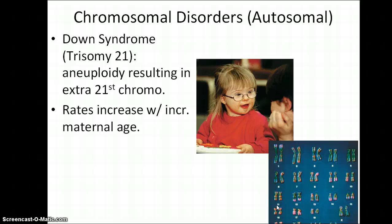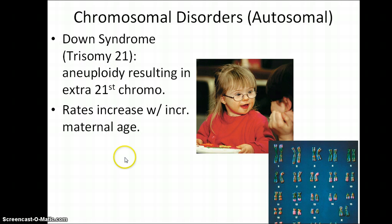In terms of chromosomal disorders, autosomal disorders are found in circumstances where there are extra or missing chromosomes in chromosomes 1 through 22, or where you have pieces that are broken off or inverted. Trisomy 21 is oftentimes cited when talking about chromosomal disorders — this occurs when an offspring inherits an extra 21st chromosome.